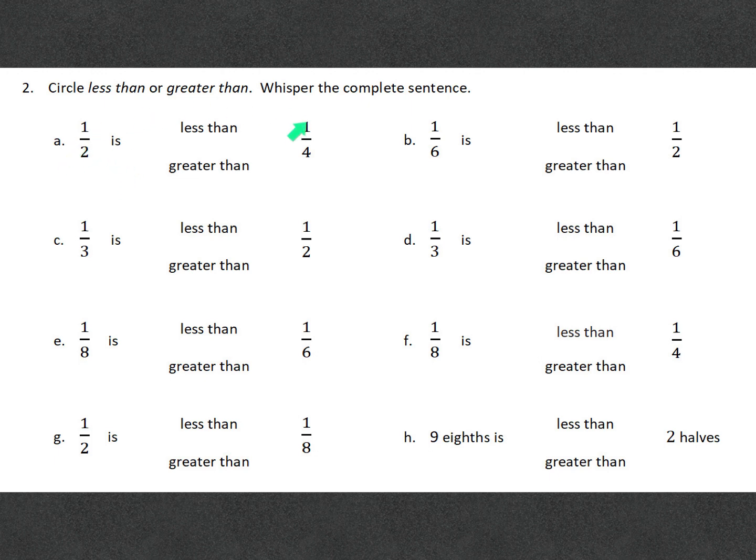The fraction is bigger than the other fraction. For A, one half is greater than one fourth because one half is bigger than one fourth.